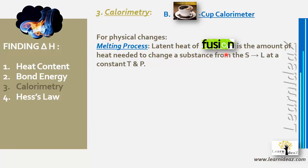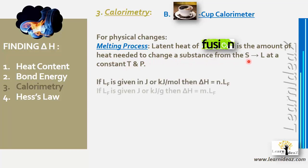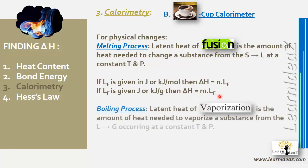The latent heat of fusion is the amount of heat needed to change a substance from solid to liquid at constant temperature and pressure. If the latent heat of fusion is given in J/mol or kJ/mol, then delta h = n × L_f. If given per gram, then delta h = m × L_f.